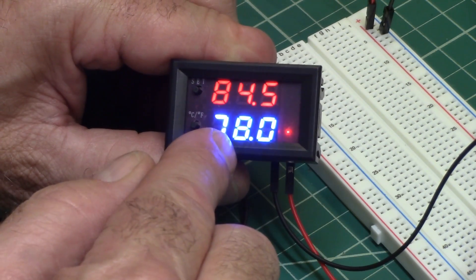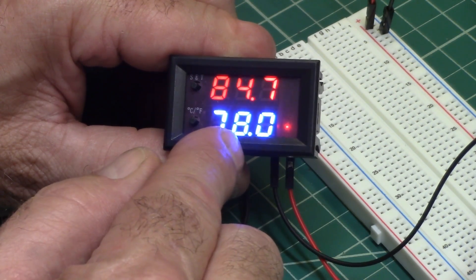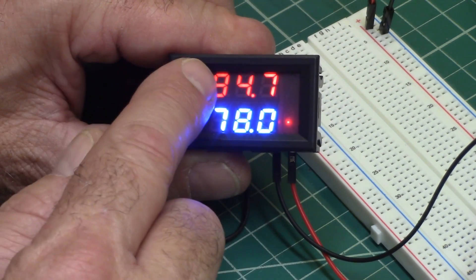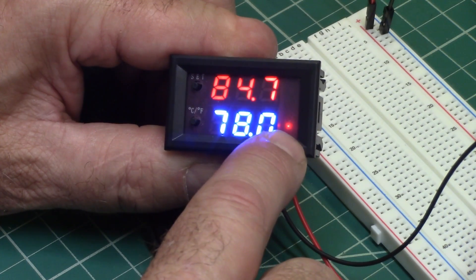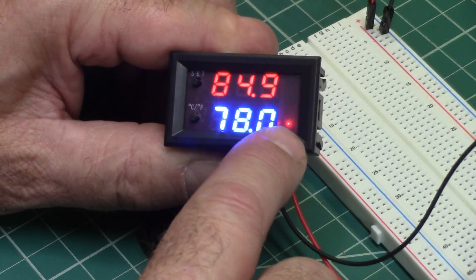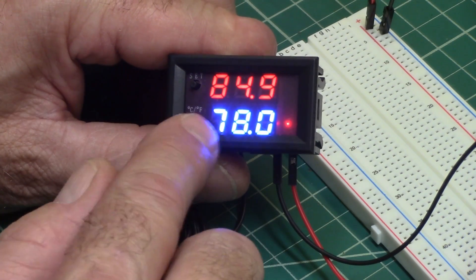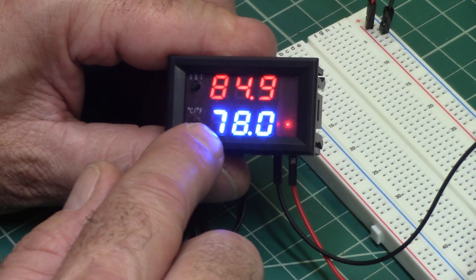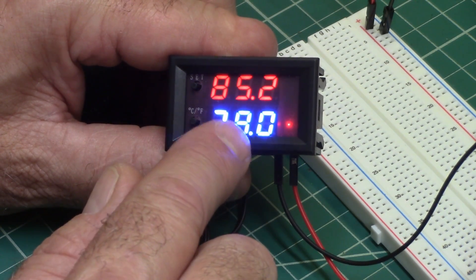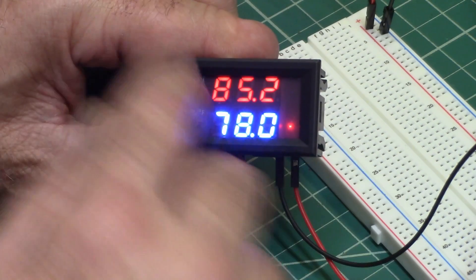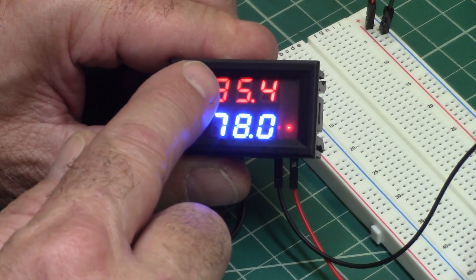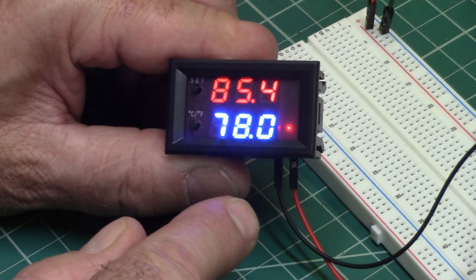So let's say you set this to 78, and you want it to cool. This one is set up for cooling right now. So it's 84 degrees in here. You can see the little red light, which means that it's active. So if you had this hooked to something like a fan, it would be running that fan right now. And so if you want it to go to 78, and then come on when it gets to 80, in other words, it'll cool it down to 78, and then it'll warm slowly, and then when it hits 80 degrees, it'll come back on.